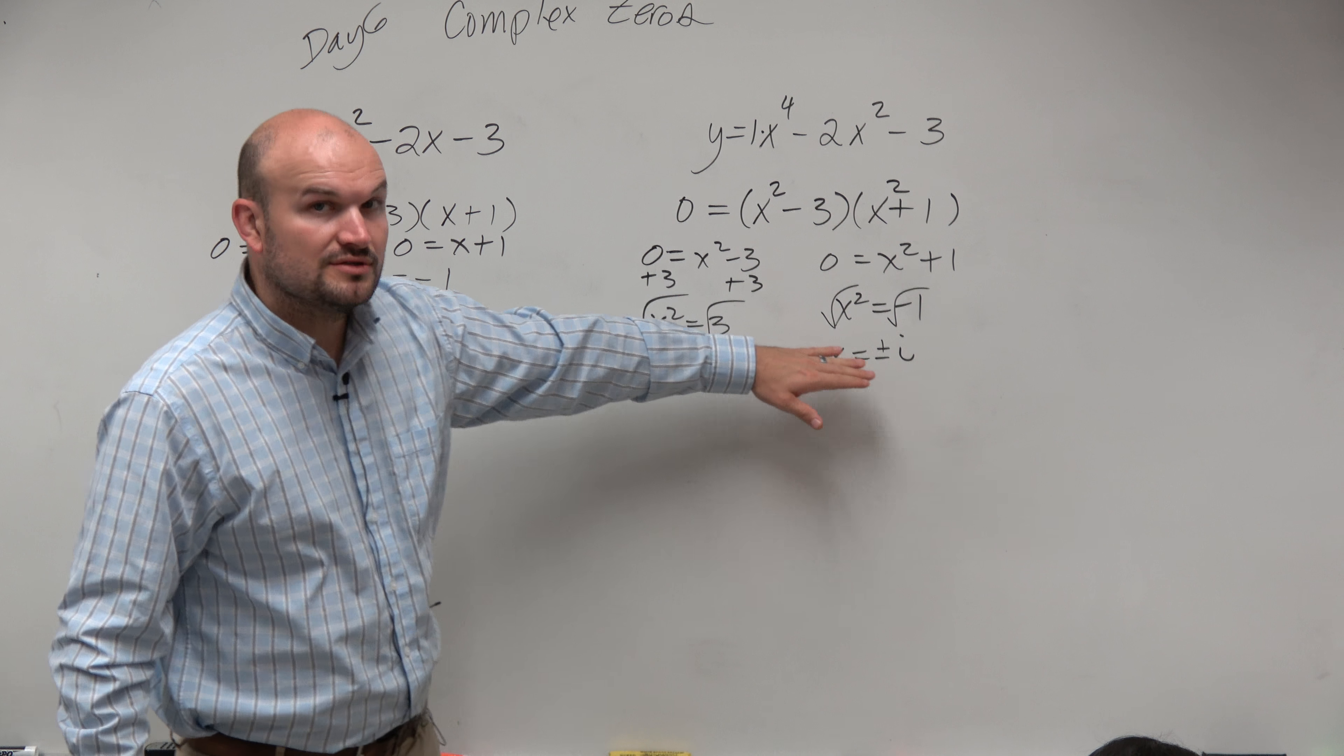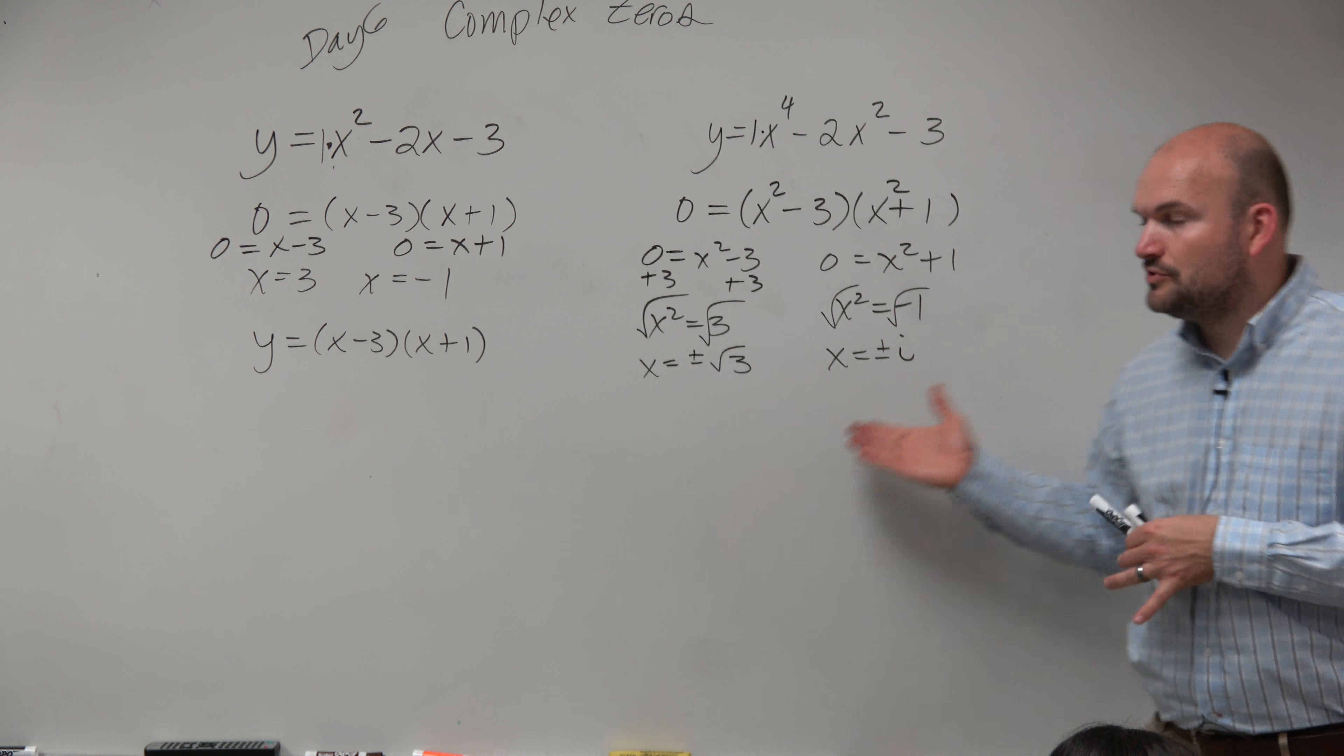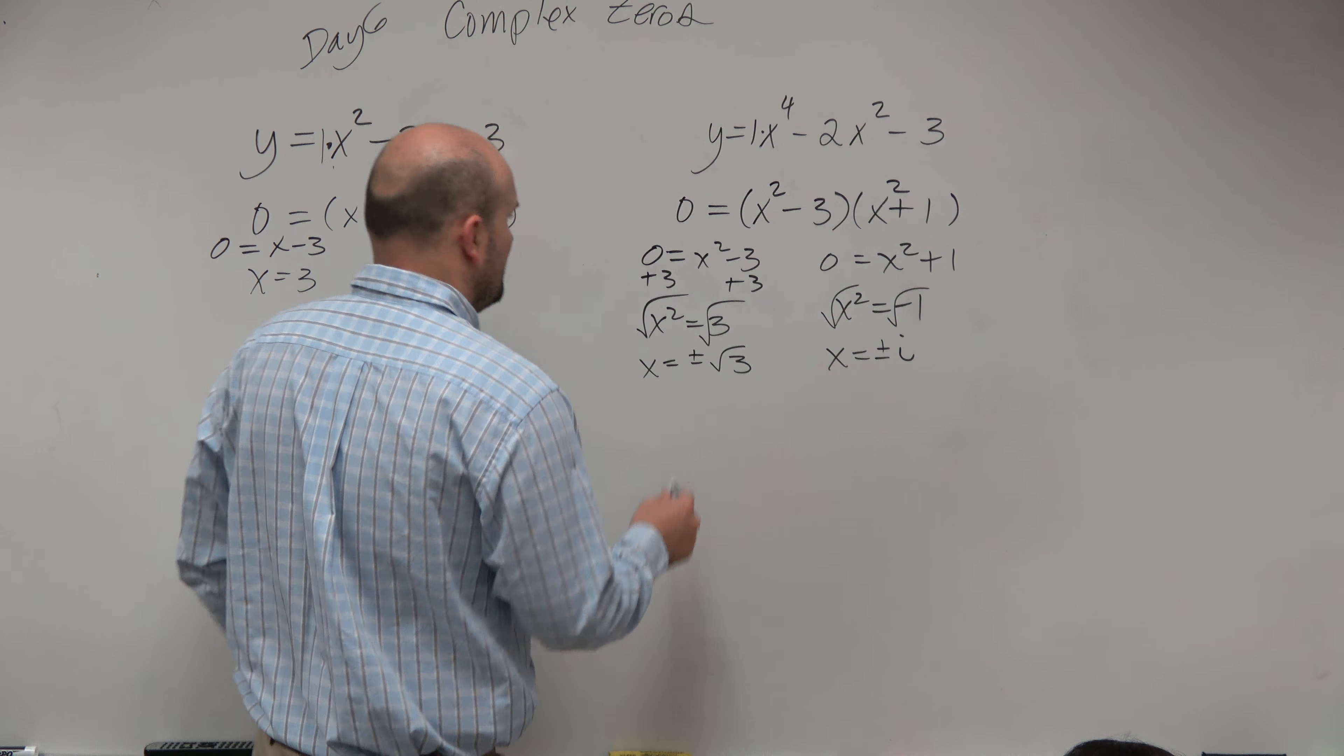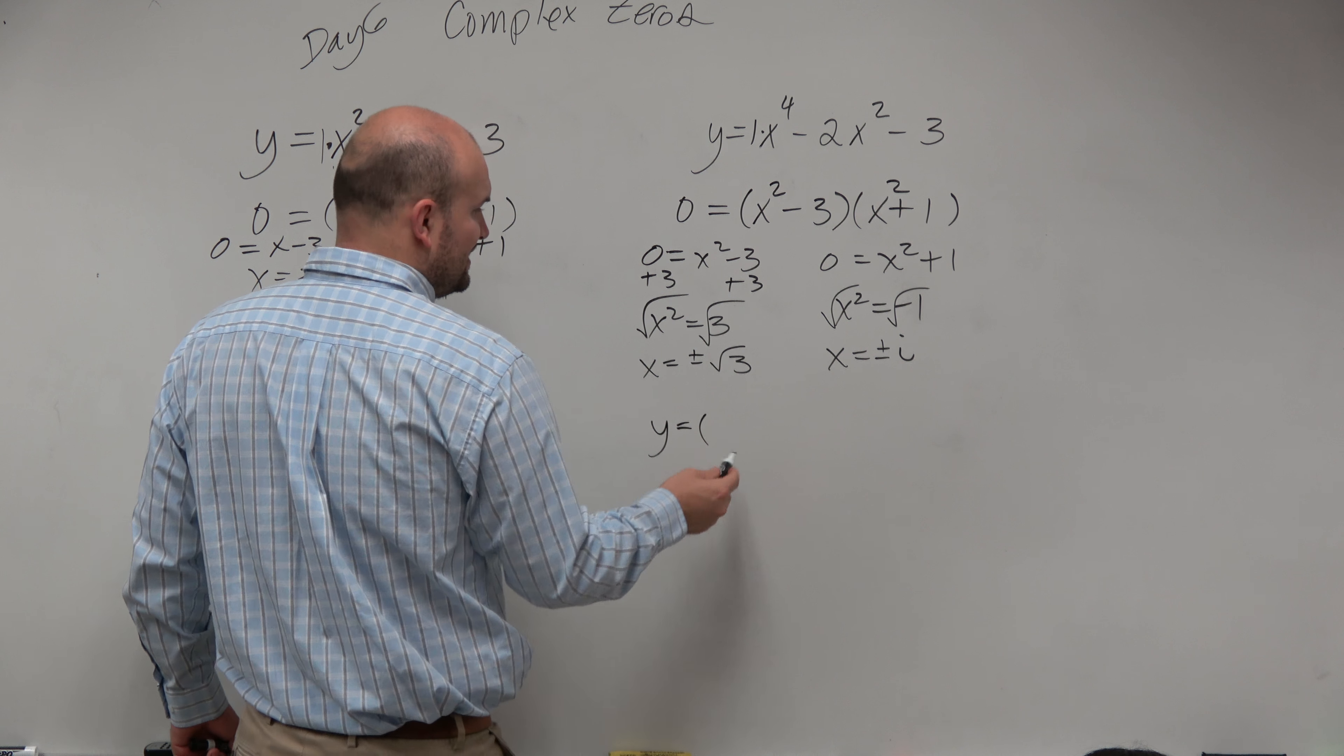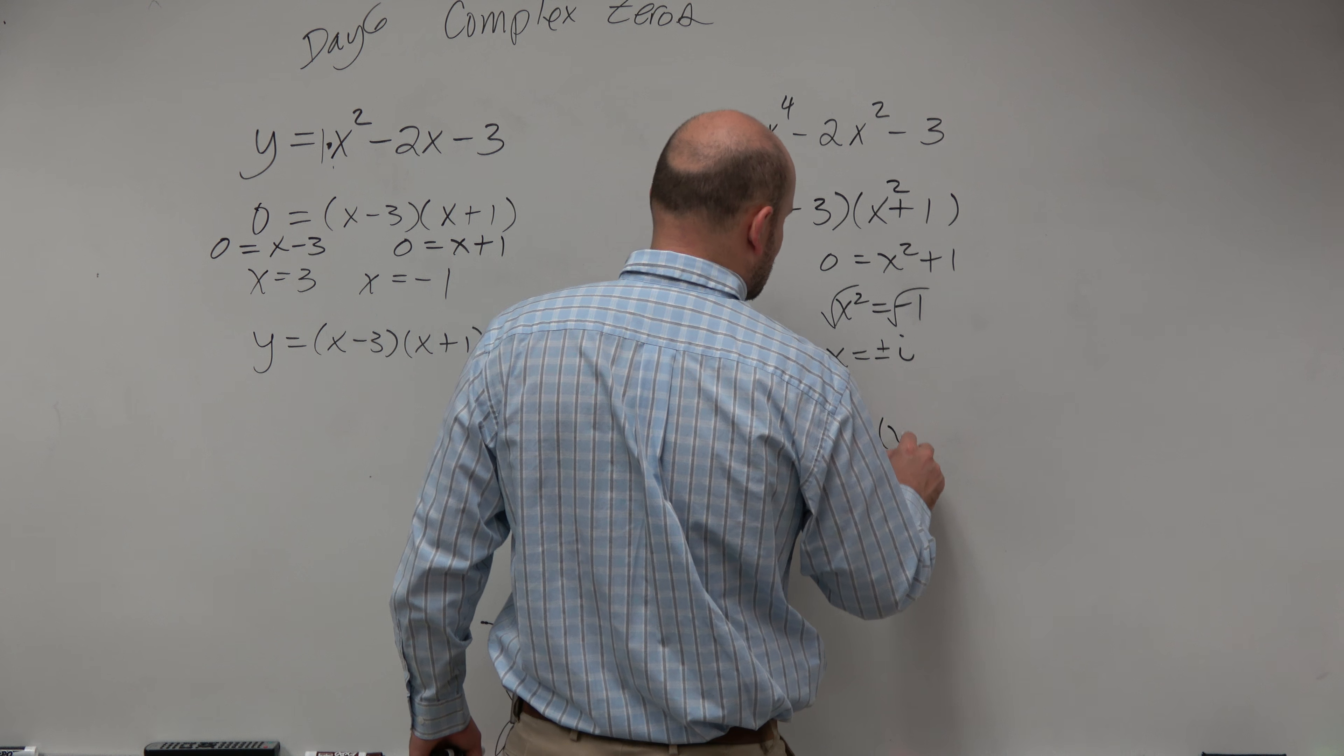So four zeros. So therefore, we're going to need to have like four factors. And you could write them back, like you could write them all set equal to x individually, and then write as factors. But hopefully, you guys can kind of pick up on what I'm doing. I'm just going to write these individually as factors.